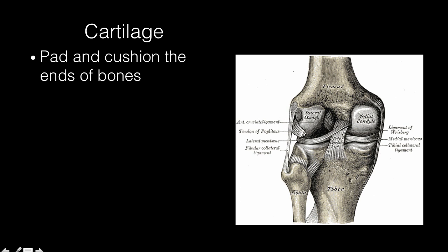Cartilage can be found on the ends of bones. Here there is a layer of cartilage on the end of the femur, and there is also cartilage in between the femur and the tibia. The job of this cartilage is to pad one bone from the other, because there is a lot of force — this bone pushing down on this bone when you step. Cartilage helps pad and cushion the joint so that the bones don't wear down on each other and creates a smooth surface. One of the most common injuries to cartilage is a tear, which can create inflammation and pain. That can be operated on by going into the joint and trimming off the torn piece of cartilage.